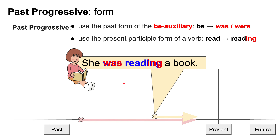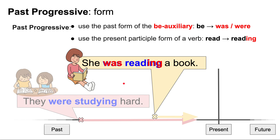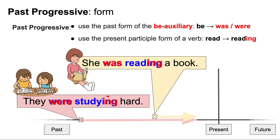Let's look at another example: they were studying hard. Here the BE auxiliary is 'were,' and the present participle form of the verb is study, studying. They were studying hard.